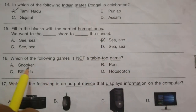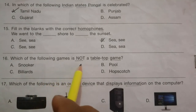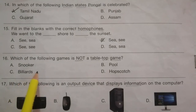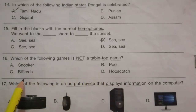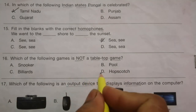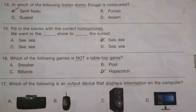Question 16: Which of the following games is not a tabletop game? The options are snooker, pool, billiards, and hopscotch. The answer is D, hopscotch.